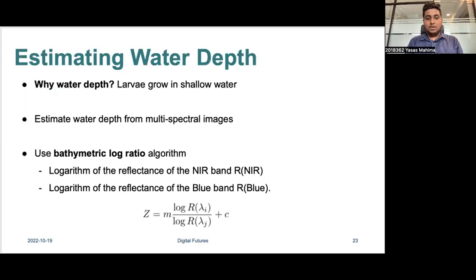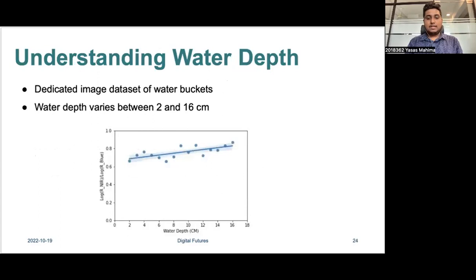Next, we estimate water depth from multispectral images. According to our preliminary literature review, mosquito larvae will only grow at water retention areas with approximately 1 cm to 1 m depth. Hence, it is important to verify whether detected water retention areas can have larvae or not. For that, we apply a bathymetric log ratio algorithm. The model assumes a linear relationship between water depth Z and log values of band reflectances R. We collected a dedicated image dataset of buckets with varying water depths between 2 and 16 cm, and the regression plot indicates a linear relationship between water depth and log ratios of near-infrared and blue-band reflectances.